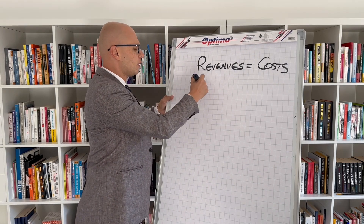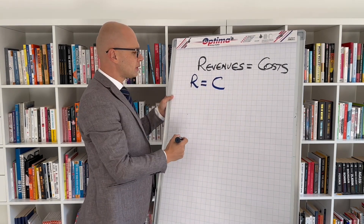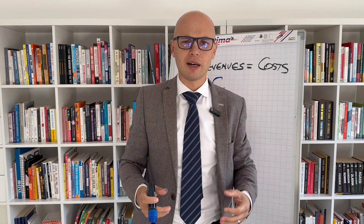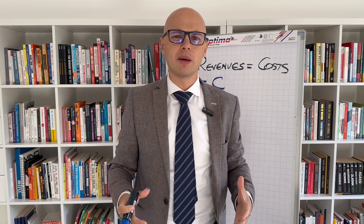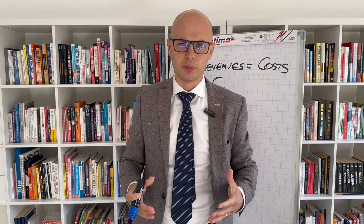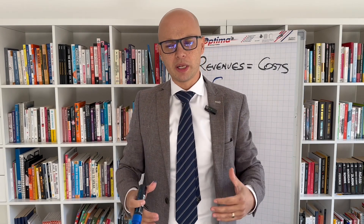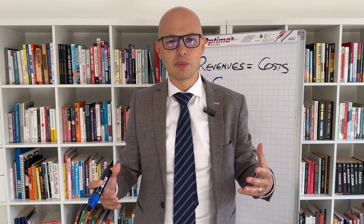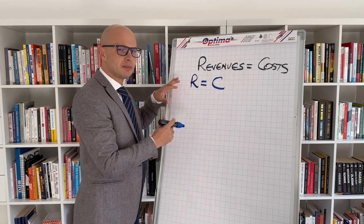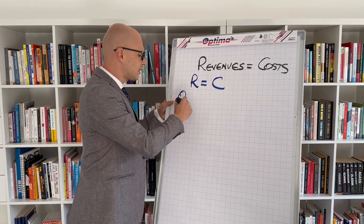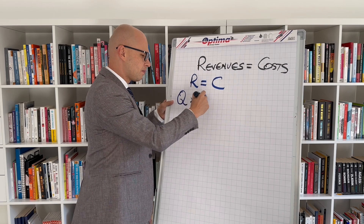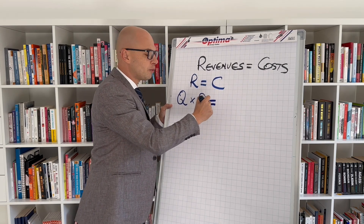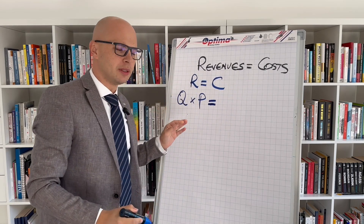If we simplify, we have revenues equal to cost. Now for revenues, let's suppose we sell something — we have a certain product. My favorite example is a coffee shop. If we have a coffee shop with one single type of product, it means I have a quantity that I'm selling at a given price. So quantity times price equals revenue.